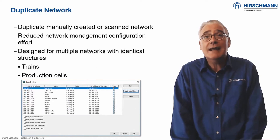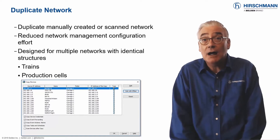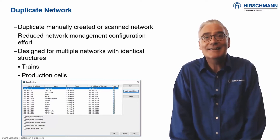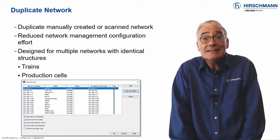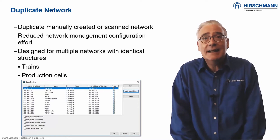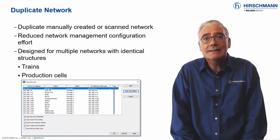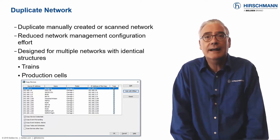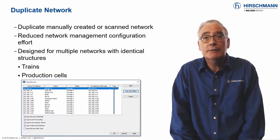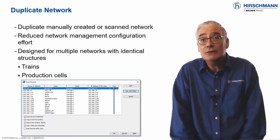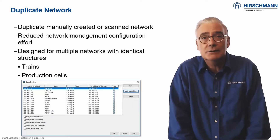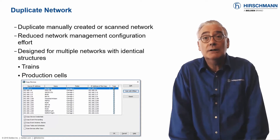There's a well-known saying that no two networks are the same. But, like many things with OT networks, sometimes reality is far removed from general understanding. As an example, let's consider a network on a train. Typically, each carriage will contain identical hardware — for example, cameras, passenger information displays, seat reservation displays, passenger counters, and emergency phones. All these components are networked.